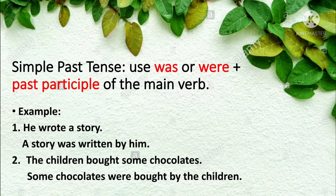When you have the simple past tense, use was or were and the past participle verb. He wrote a story — a story was written by him. The children bought some chocolates — some chocolates were bought by the children. Notice carefully that the tense does not change, but you are using the past participle verb. Written and bought are past participle verbs.